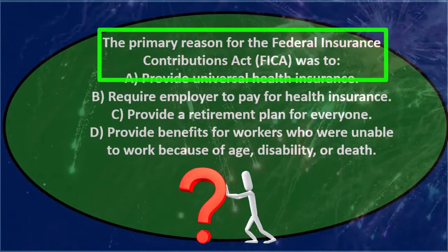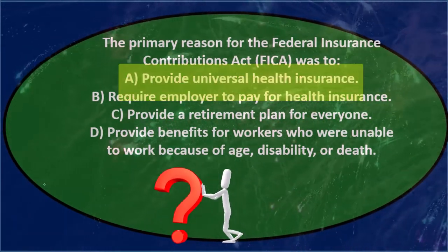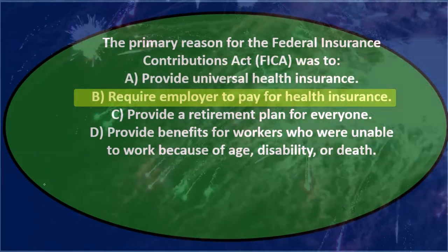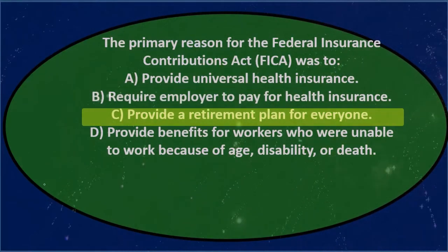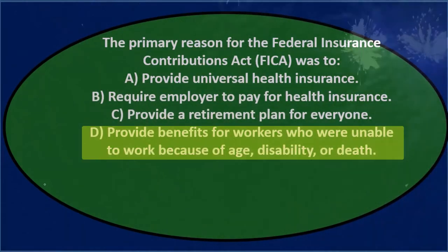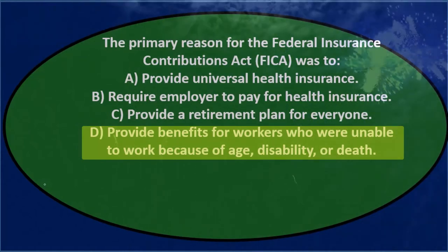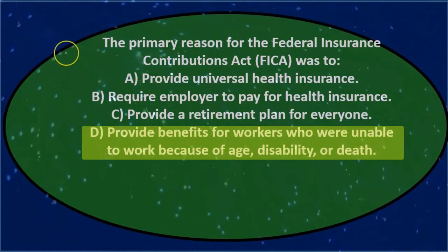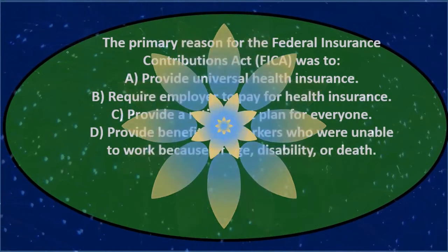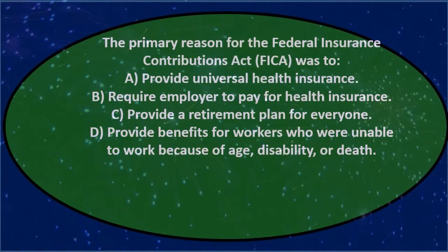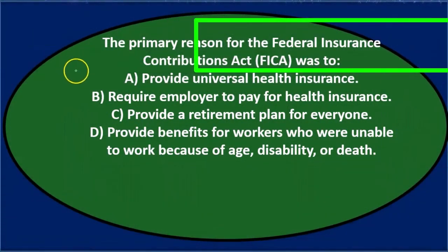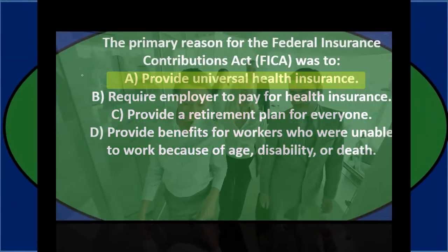Next question: the primary reason for the Federal Insurance Contribution Act, or FICA, was to: A) provide universal health insurance, B) require employer to pay for health insurance, C) provide a retirement plan for everyone, or D) provide benefits for workers who were unable to work because of age, disability, or death.